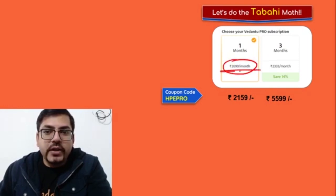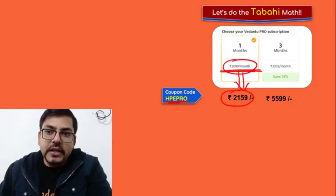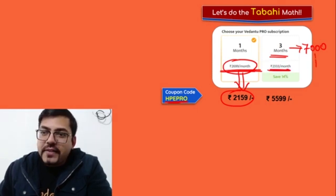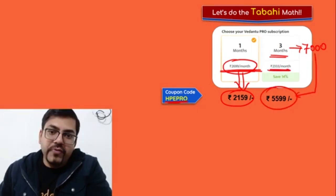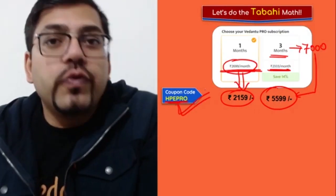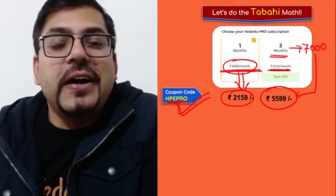Let me just give you an example. So say for example you go to the page and there you'll find one month course in 2700 rupees. But if you apply this coupon code HPEPRO, this 2700 will reduce to 2159. Similarly, for a three month course you'll have to pay 7000 rupees - that makes it 2300 rupees per month. So this 7000 fees will reduce down to 5600 rupees with this coupon code.